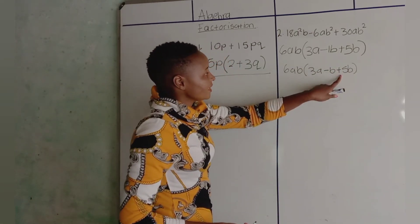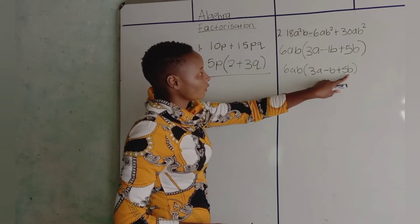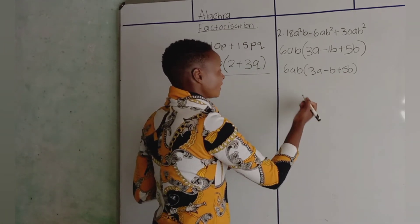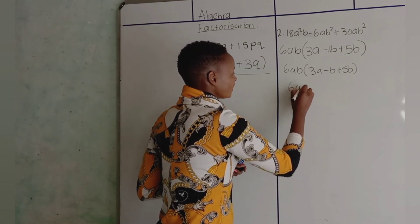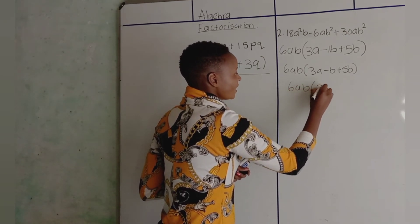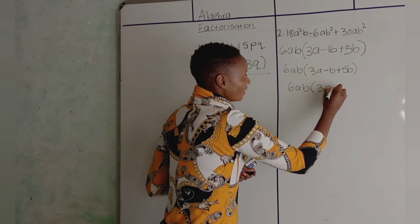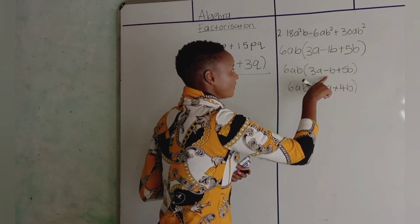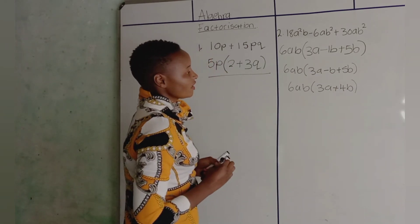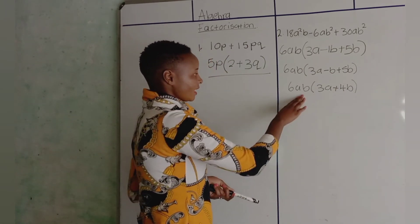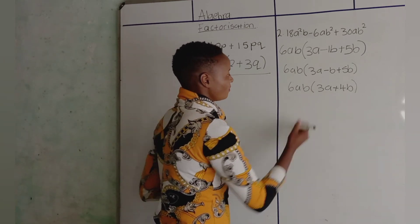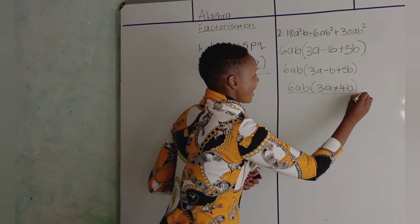5B and B need to combine. So, we have 5B minus B, you're left with 4B. So, it's 6AB open bracket, 3A plus 4B. So, our final answer: 6AB open bracket, 3A plus 4B.